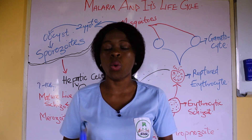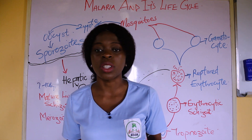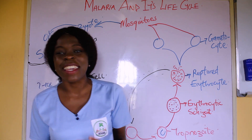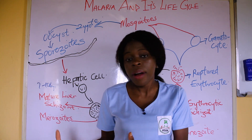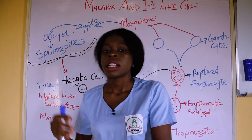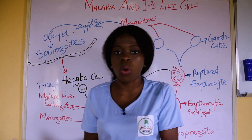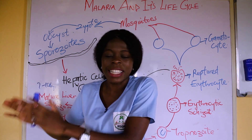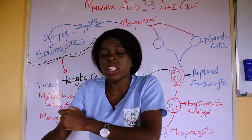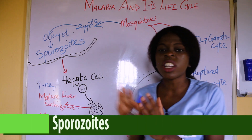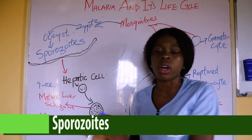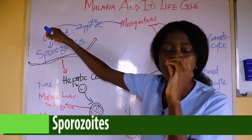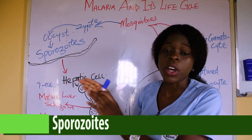Now let's look at the life cycle of the malaria parasite. The mosquito transmits this plasmodium — for example, if I am infected with the malaria parasite, which is the plasmodium gamete, the mosquito comes and bites me, then that infected mosquito goes to somebody that's not infected, bites that person, and transfers what is known as sporozoites into the blood of that particular person. The infected mosquito injects sporozoites into the human bloodstream.